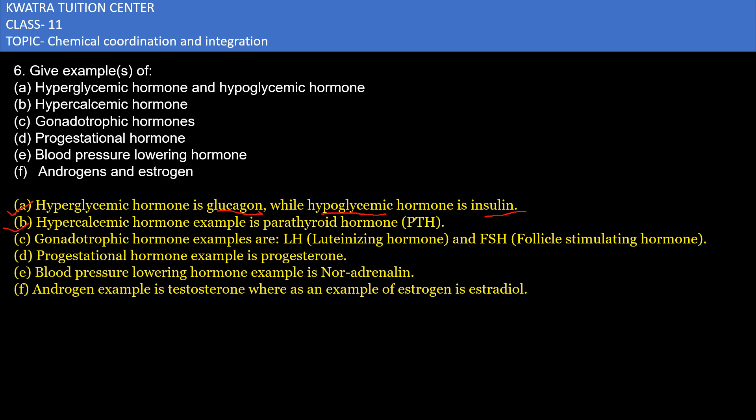The second one is the hypercalcemic hormone — 'hyper' meaning high — so it refers to high calcium levels, and the example for this is parathyroid hormone. The third question covers gonadotropin hormones, which act upon the gonads; the examples are LH (luteinizing hormone) and FSH (follicle stimulating hormone).